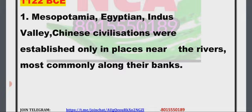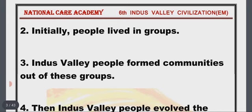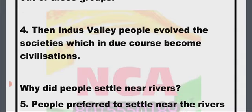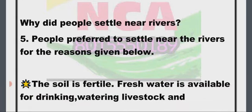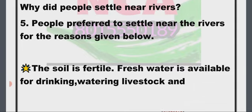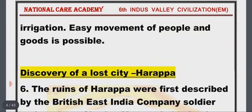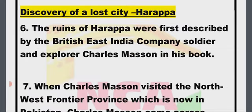Point 2: Initially people lived in groups. Point 3: Indus Valley people formed communities out of these groups. Point 4: Indus Valley people evolved these societies which in due course became civilizations. Point 5: People prefer to settle near rivers because the soil is fertile, fresh water is available for drinking, watering livestock, and irrigation, and easy movement of people and goods is possible. Discovery of a lost city — Harappa. Point 6: The ruins of Harappa were first described by the British East India Company soldier and explorer Charles Mason in his book.